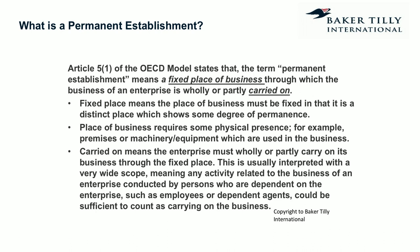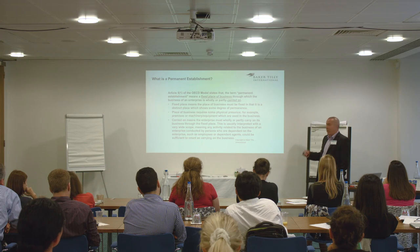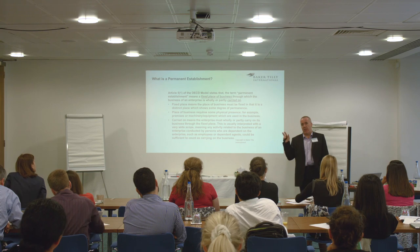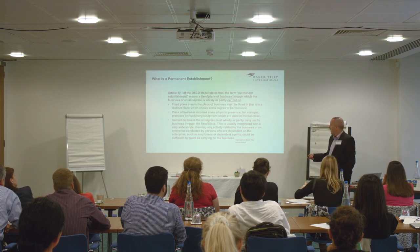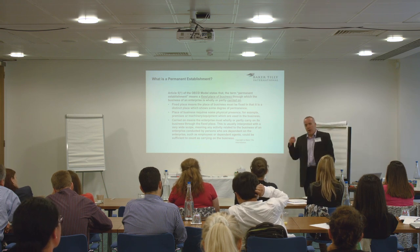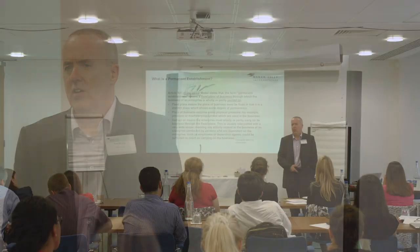Article 5.1 covers any activity related to the business of an enterprise conducted by persons who are dependent on the enterprise — such as employees. If people are employed by us and physically present and working, that probably puts us on the wrong side of the PE definition. Then there are dependent agents — greyer territory. We might want to use agents on a contract or commission basis, but the question is whether they are dependent upon us. We'll look at what that means as we go along.